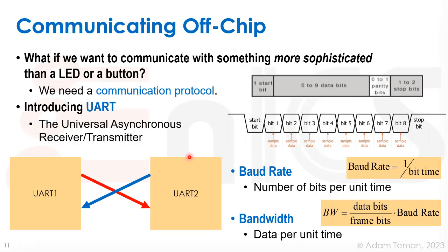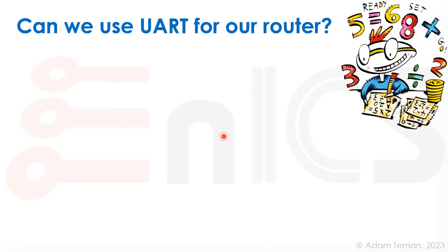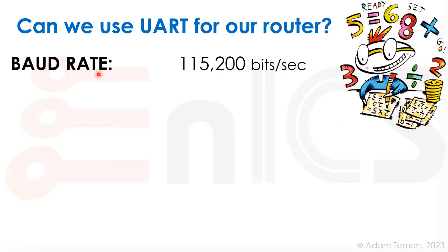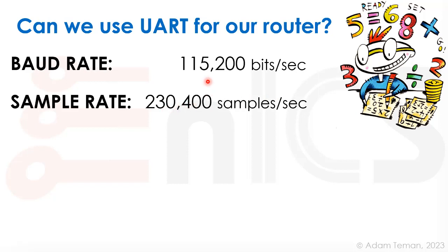UART was developed in the 1960s and uses high voltages like ±15V. We used to have serial ports for it, but nowadays it's typically done through USB adapters. Despite being old and slow, UART is found in virtually every system and is the first thing you'll use to debug a chip when it comes back from the manufacturer and doesn't work. It's also a good way to probe and hack into different types of systems.